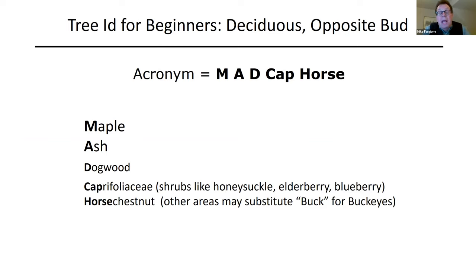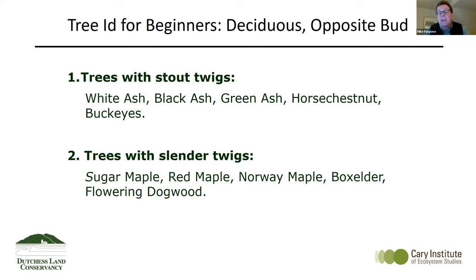There are only a few trees here in the Northeast that have this opposite leaf or bud arrangement. People have developed phrases to try and make it easier to remember them. Here's one acronym: MADCAP HORSE. M stands for maples, A is for ashes, D is for dogwoods, CAP is for Caprifoliaceae — the family of shrubs like honeysuckles and elderberries and blueberries — and HORSE is for horse chestnut. If you live in the Midwest, you might substitute buck for horse because there are more buckeyes in that part of the country.